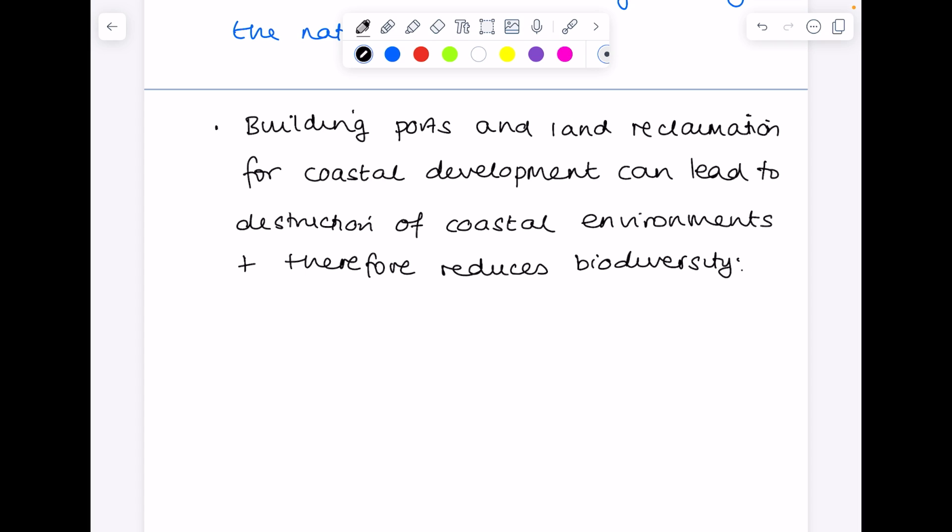Building ports and land reclamation for coastal development can lead to the destruction of coastal environments, reducing biodiversity. From an industrial point of view, people build ports which contain cargo ships to move products around. Land reclamation is all about draining land of sea so you can build on it, and clearly both of these things are going to destroy coastal environments and reduce biodiversity.